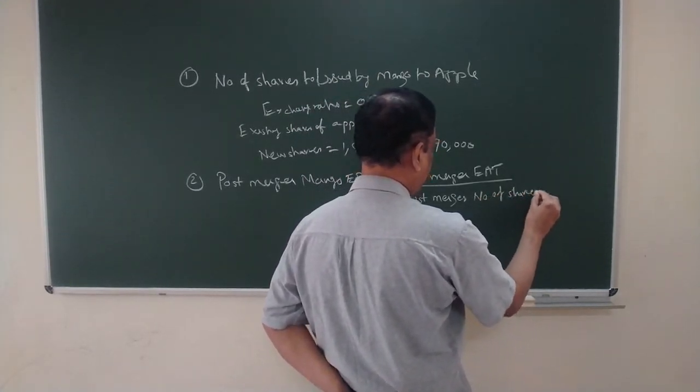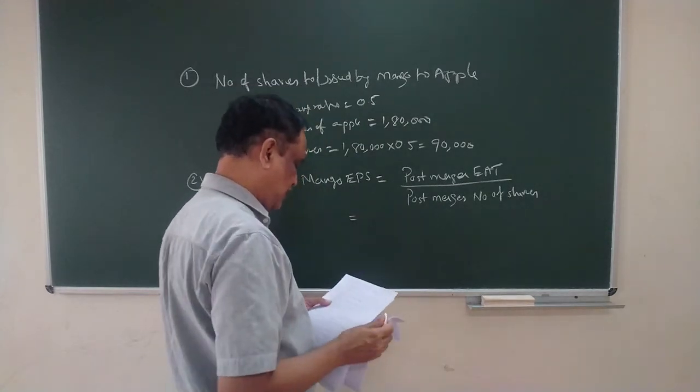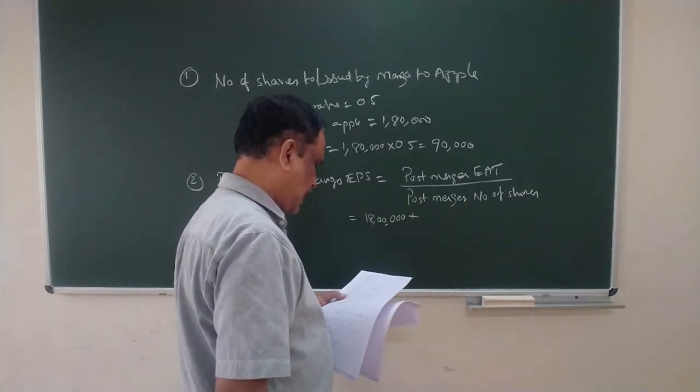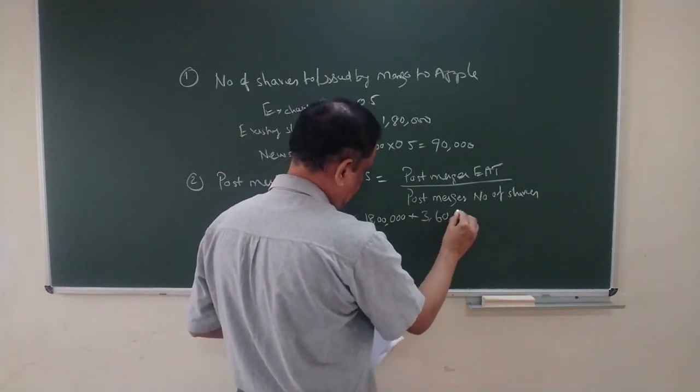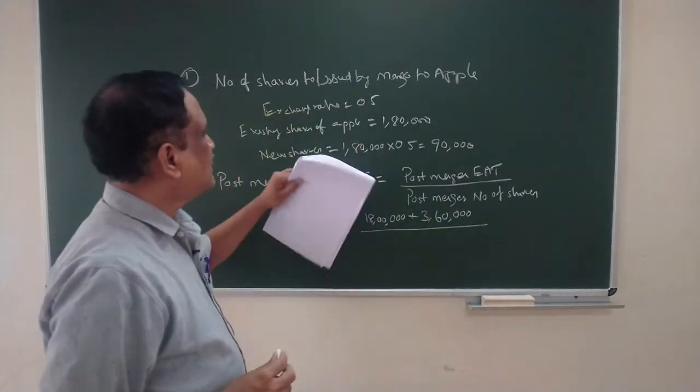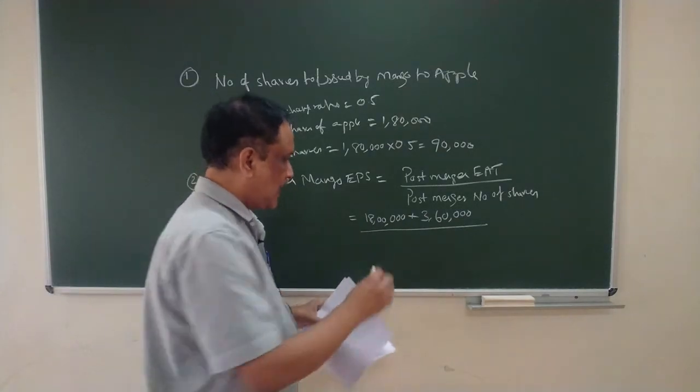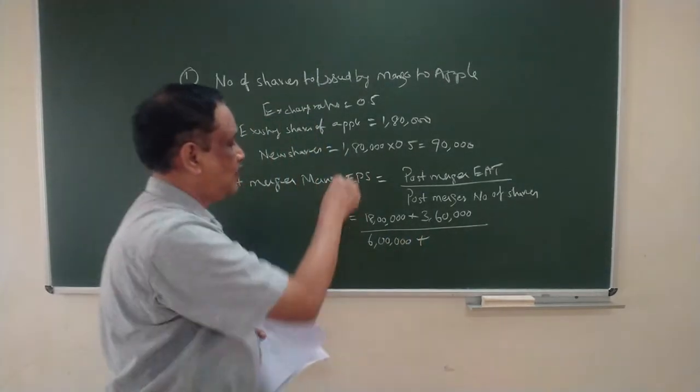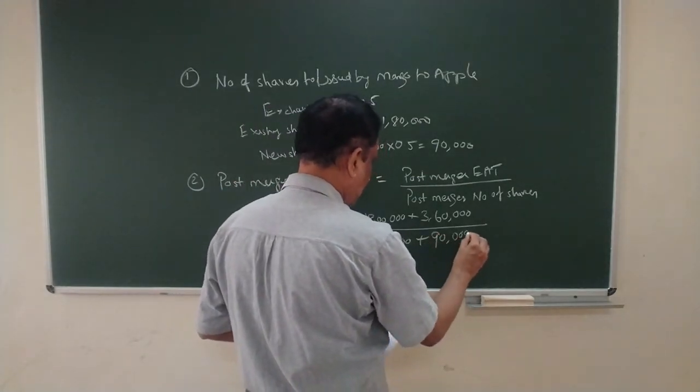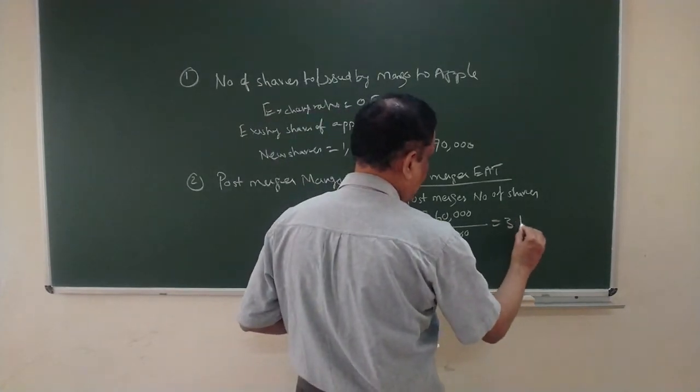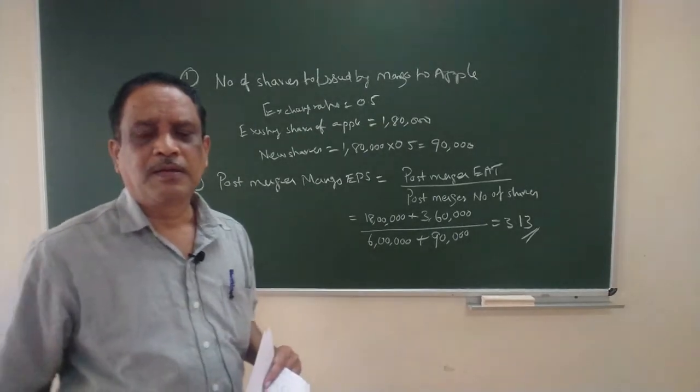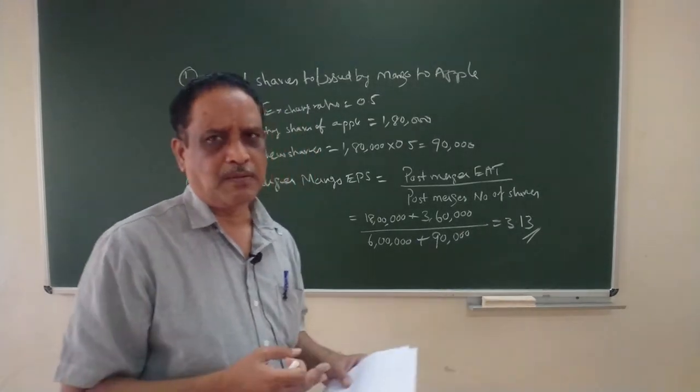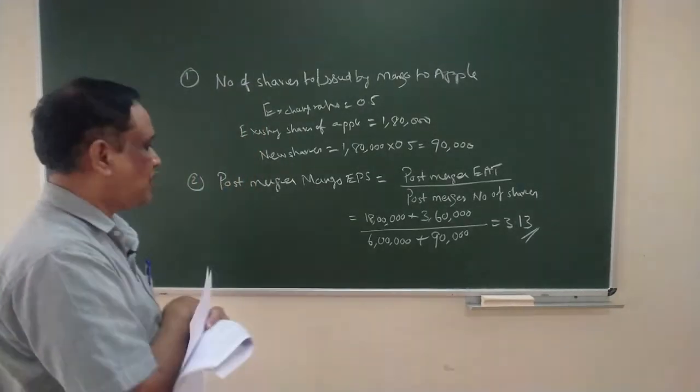Post-merger earnings will be: for Mango it is 18 lakhs given in the problem, plus 3 lakhs 60,000 for Apple, divided by existing shares of Mango 6 lakhs and new shares issued 90,000. So this will give you 3.13. 3.13 is the EPS post-merger for Mango, because after merger Apple will also become Mango.